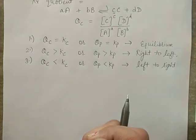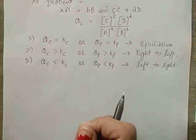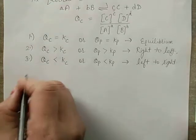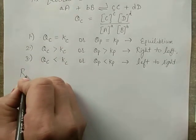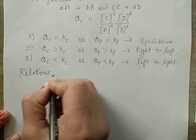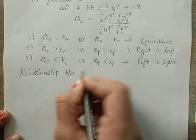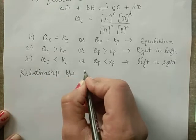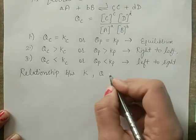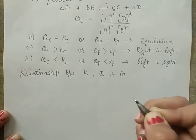This is the application of equilibrium constant. The next topic is the relationship between equilibrium constant K, reaction quotient Q, and Gibbs energy G.